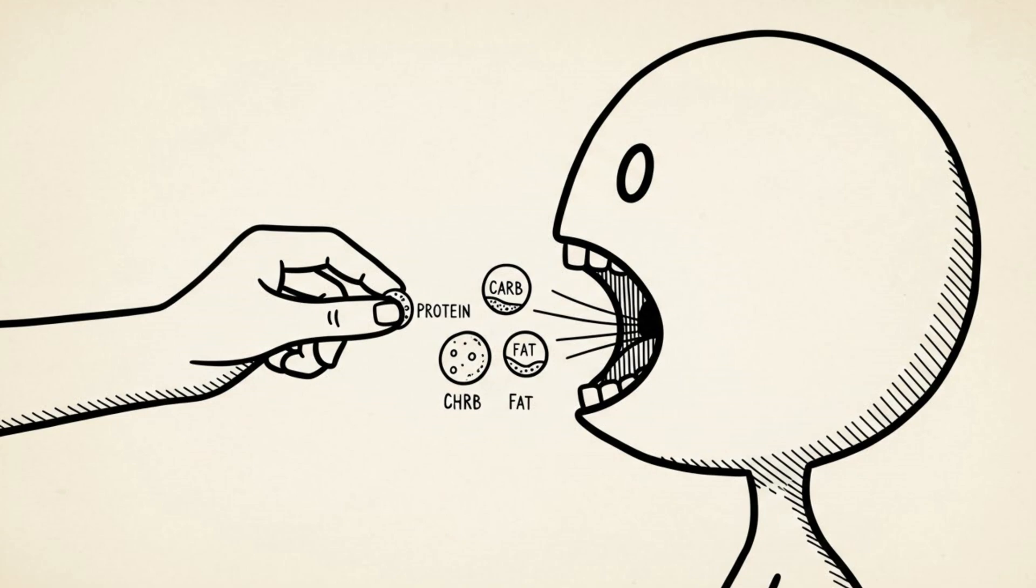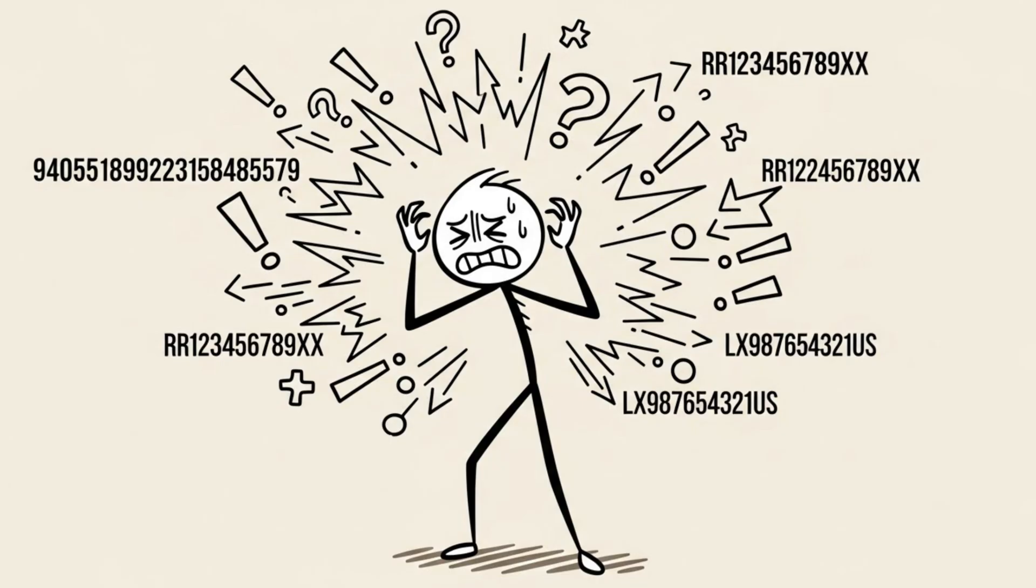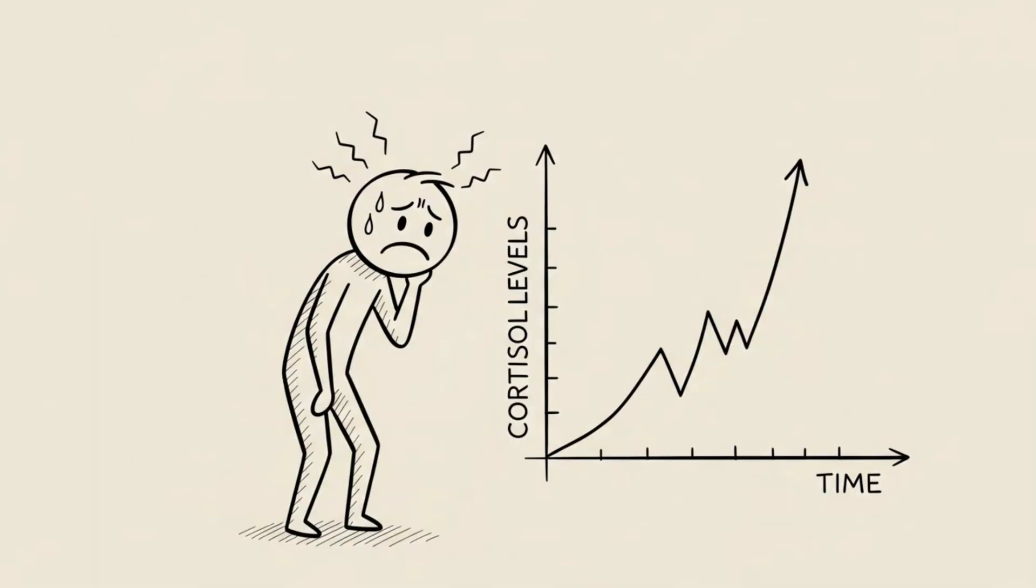Every fitness influencer tracks their food. It is seen as the ultimate tool for control. I was obsessed. I knew every gram of protein, carb, and fat that entered my mouth. But here is the problem: my brain was so fixated on the numbers that I lost connection with my body. Tracking became a source of anxiety.